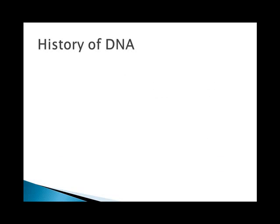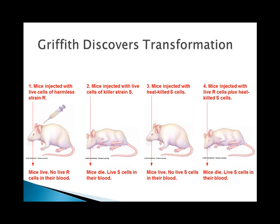First, we're going to take a look at the history of how DNA was discovered. We really start off with Frederick Griffith. He did experiments concerning the transformations of S and R strains of a bacterium. The S and R stand for smooth and rough. What he found was that the smooth ones were the ones that killed the mice and the rough ones did not. This is the first evidence of some genetic factor that is transferable, because he did the heat-killed S cells and so on.